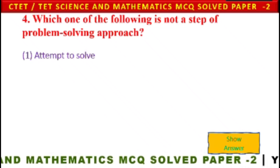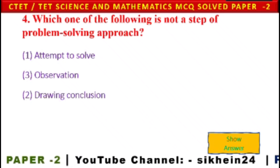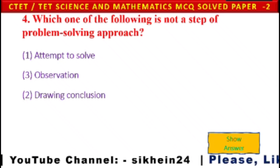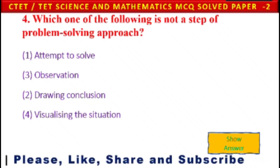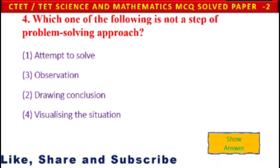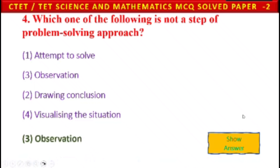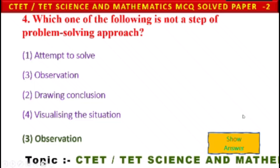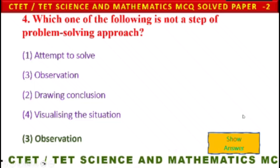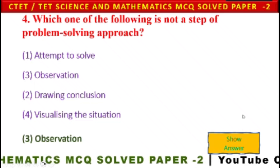Next question: Which one of the following is NOT a step of the problem-solving approach? 1) Attempt to solve, 2) observation, 3) drawing conclusion, 4) visualizing the situation. The answer is observation — observation is not a step of the problem-solving approach.